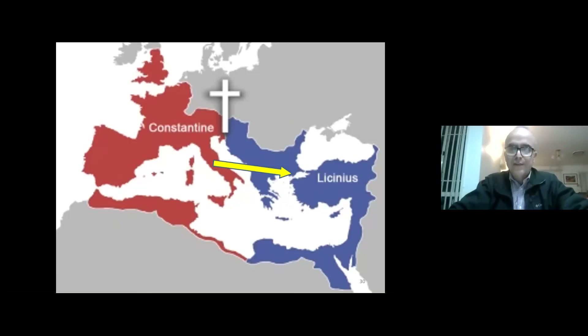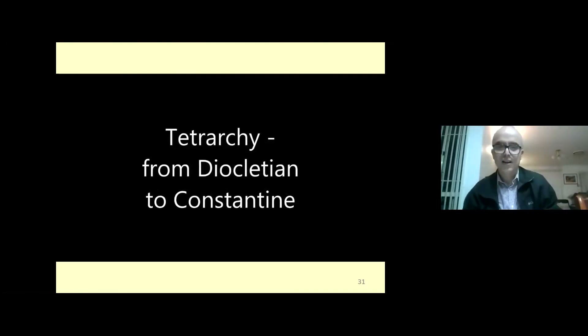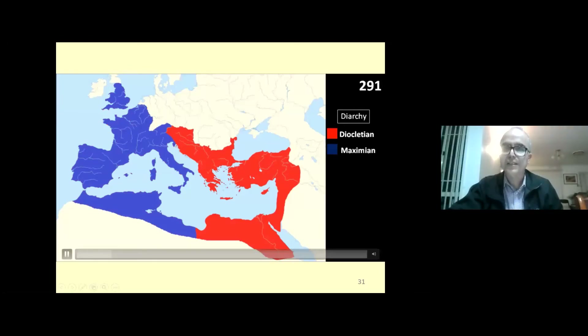After that, Licinius — who had been pro-Christian — turned against the Christians, reneging on the Edict of Milan, and began to persecute Christians in the eastern empire. Constantine was determined to defeat Licinius and take the whole empire. After further major battles, Licinius was totally defeated in the year 324 AD. The earthquake of the sixth seal was complete. The Roman Empire had completely changed in just 12 years, and Constantine became the sole emperor of the entire Roman Empire.